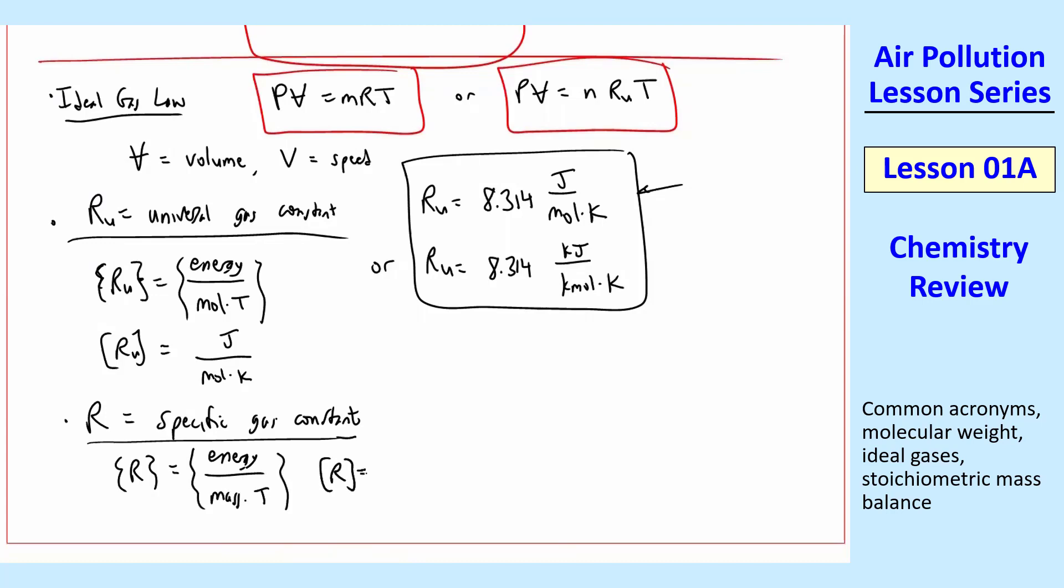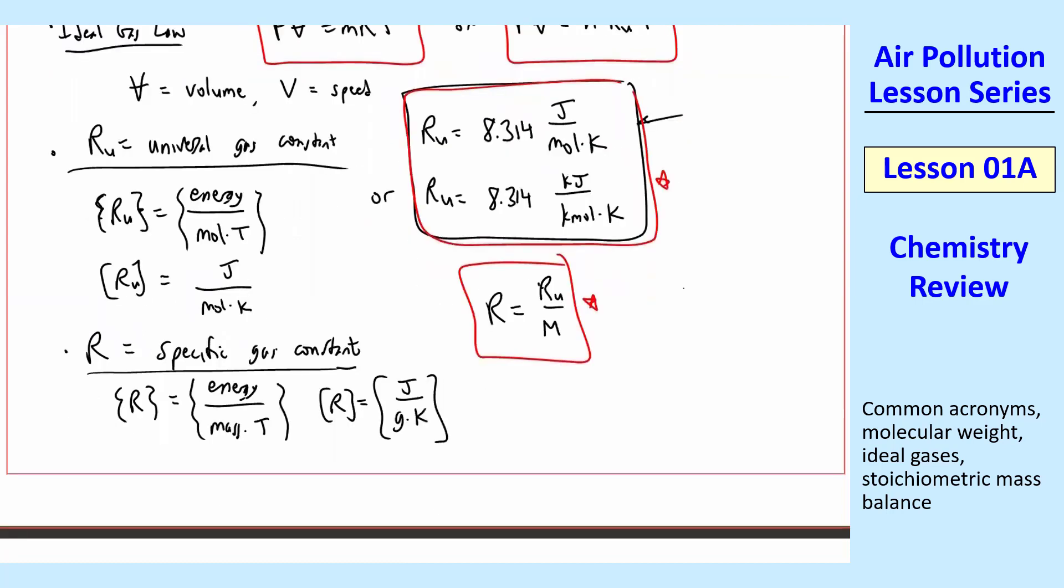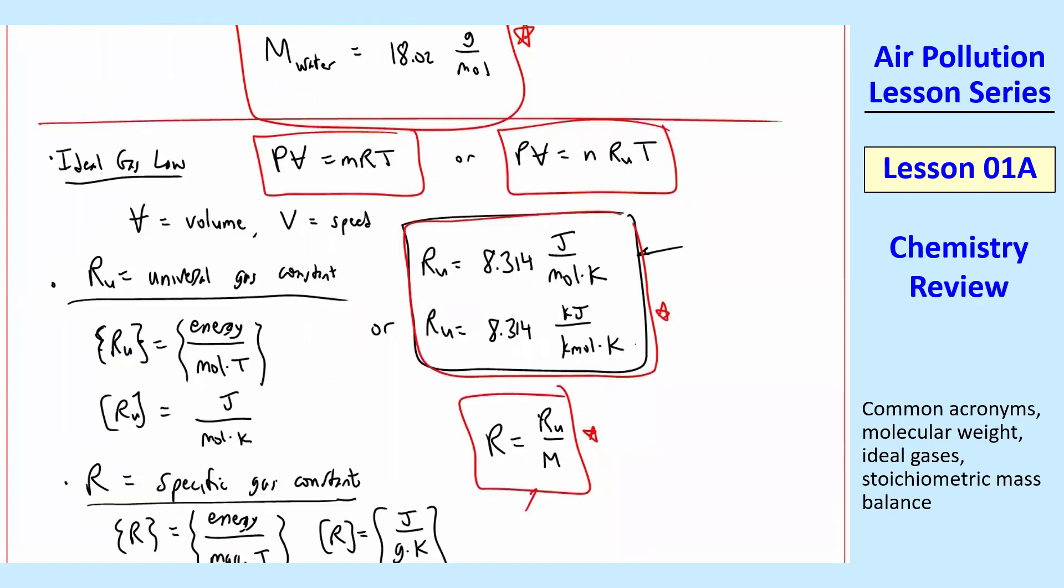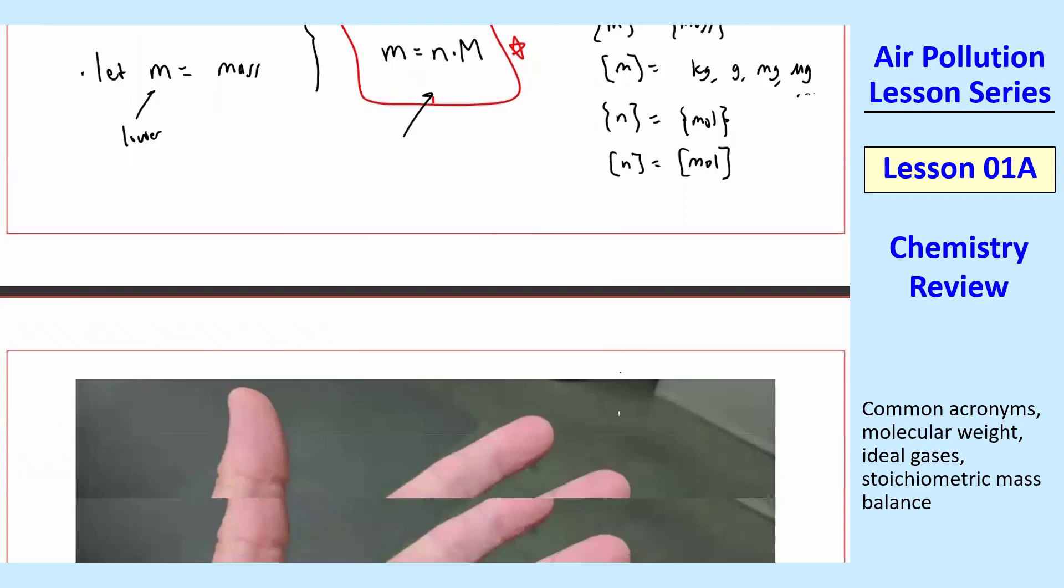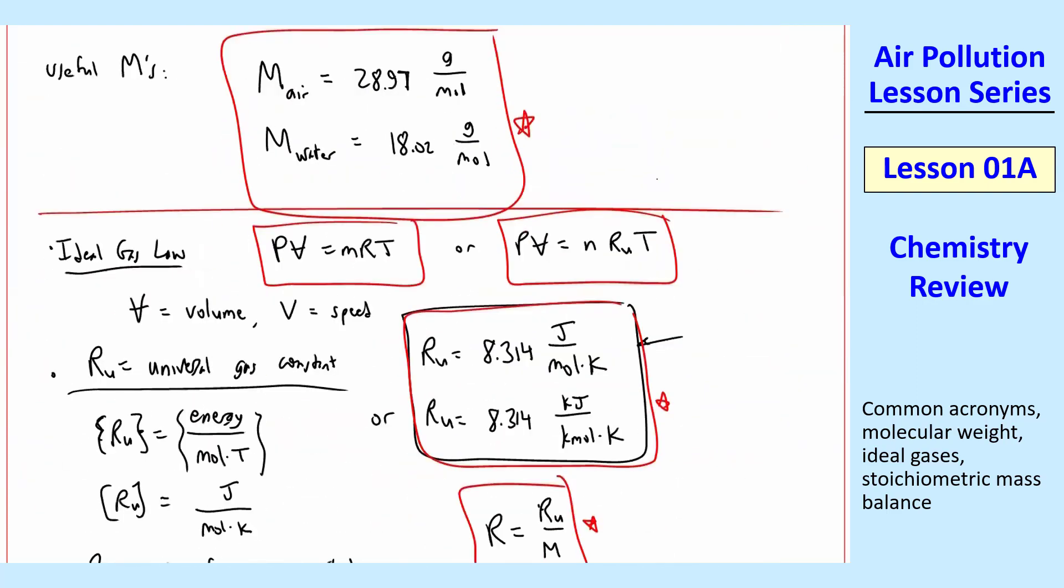And the units of R by itself are joule per gram k, or kilojoule per kilogram k. And the equation for R is equal to Ru over molecular weight M. And you can verify the units of R by just plugging units into here and using this equation to convert from mass to number of moles, and vice versa.